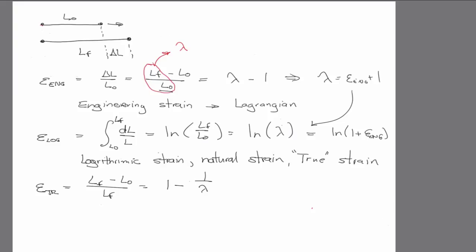Now, it turns out that we can actually combine all of these into something called a Seth Hill strain. So, it's like a family of strain measures. And then you can see that immediately, if M equal to 1, we get the engineering strain.